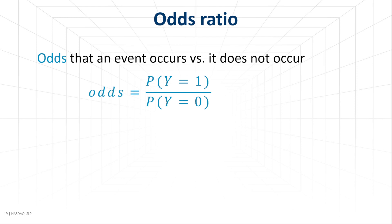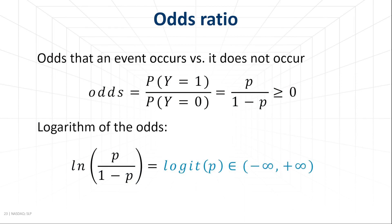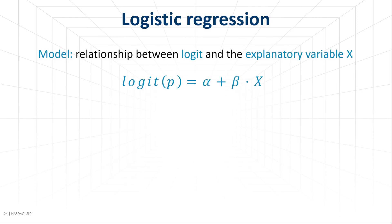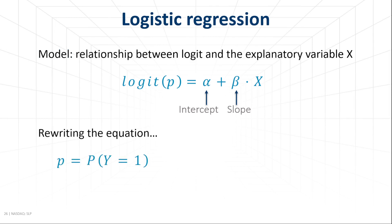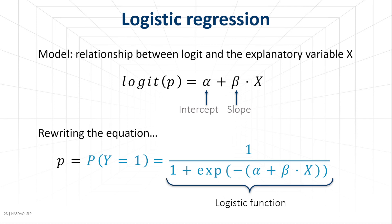An important notion in the modeling of probabilities is the odds ratio. It is the ratio of the probability that an event occurs versus the probability that it does not occur. As it takes only positive values, it is convenient to define the logarithm of it, which is defined from minus to plus infinity. The logarithm of p over 1 minus p is called the logit of p. Recalling the linear model for continuous variables, we can define a linear model relating the logit of p to the explanatory variable x. Parameter alpha is the intercept and describes the value of the logit when x equals 0, while beta describes the change in logit associated with a change in x. Rewriting this equation, we get the formula for the probability p itself — this is the well-known logistic function, and this model is called logistic regression.